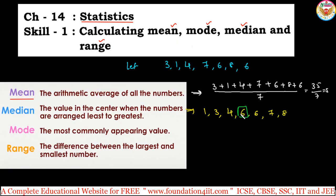The middle value is 6, so the median is 6. Mean is 5 and median is 6. Mode is the most commonly appearing value — the number that is repeated the most times. Here, 6 appears two times, so 6 is the mode. If both 6 and 8 appeared two times, both would be the mode.